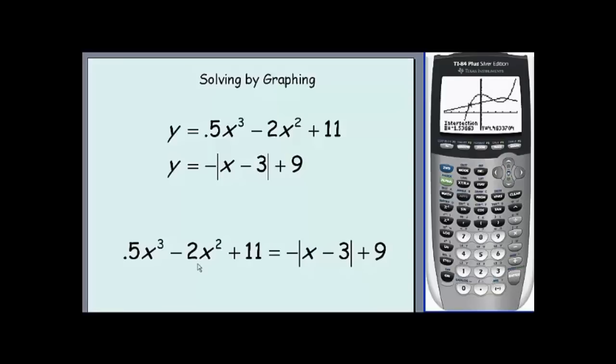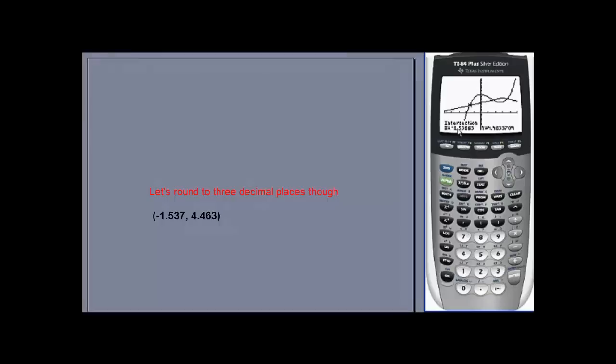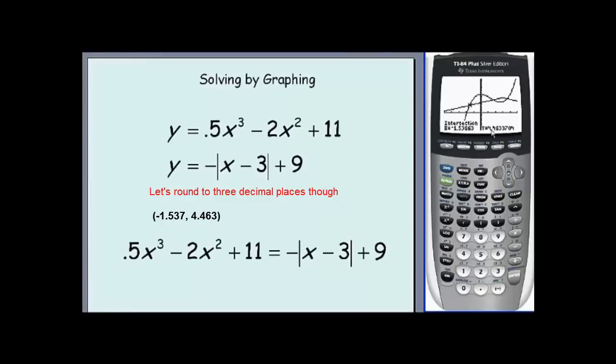So one of our solutions to this equation is X equals about negative 1.5. If we were solving this system, our Y value that corresponds with this X value would be 4.46, roughly. We have to do this same process twice more because there's two more solutions.